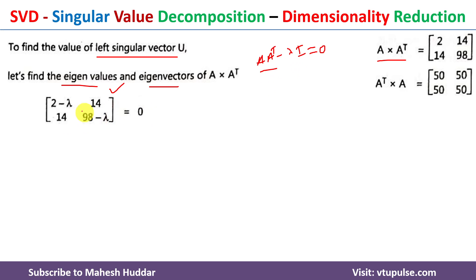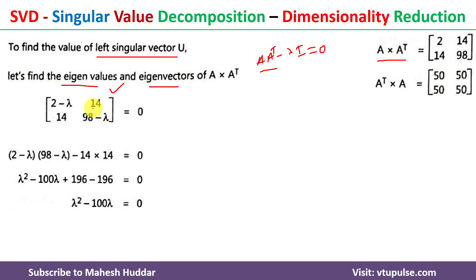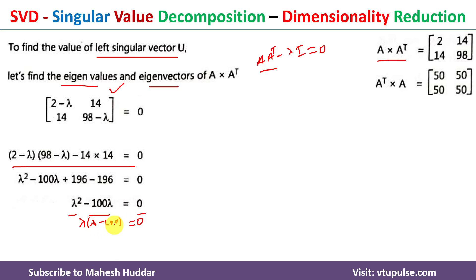Taking the determinant: (2−λ)(98−λ) − 14×14 = 0. Expanding and simplifying gives λ² − 100λ = 0. Factoring out λ: λ(λ − 100) = 0. So the two eigenvalues are λ = 0 and λ = 100.